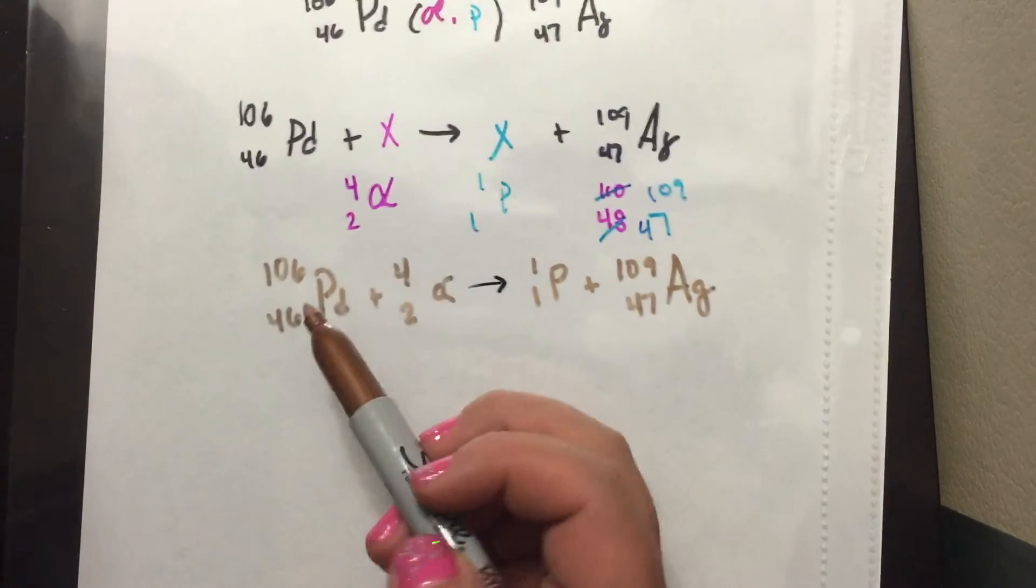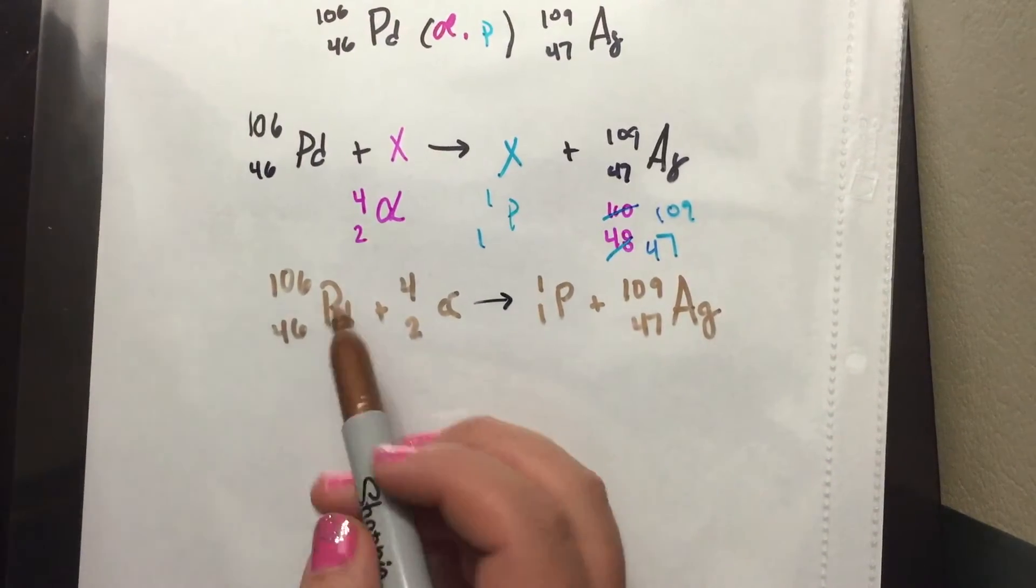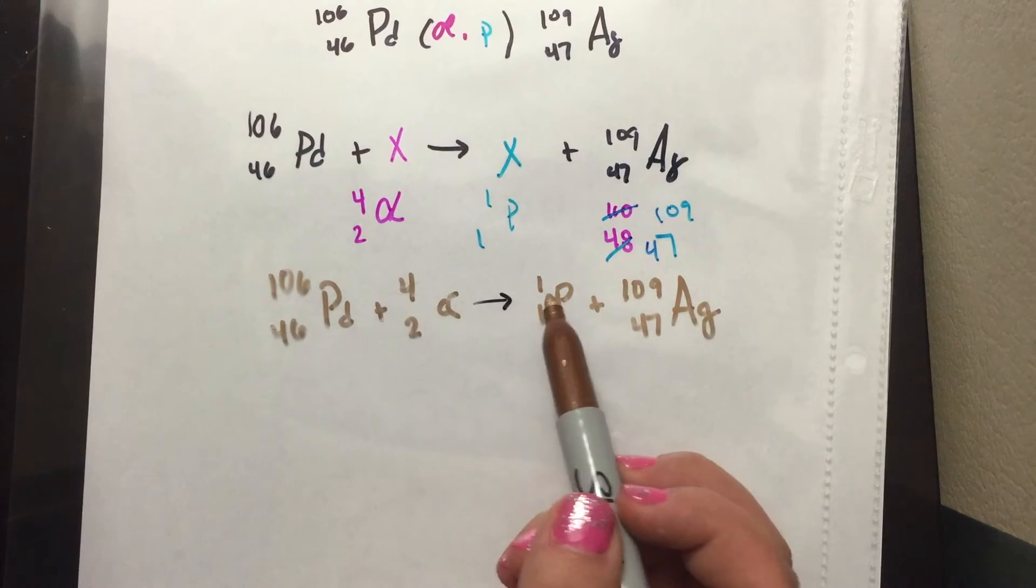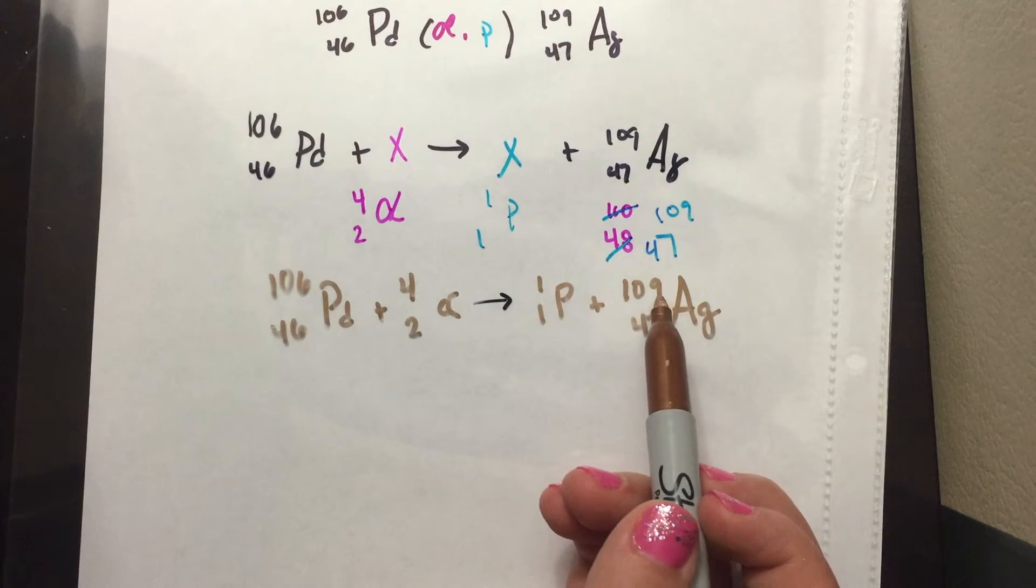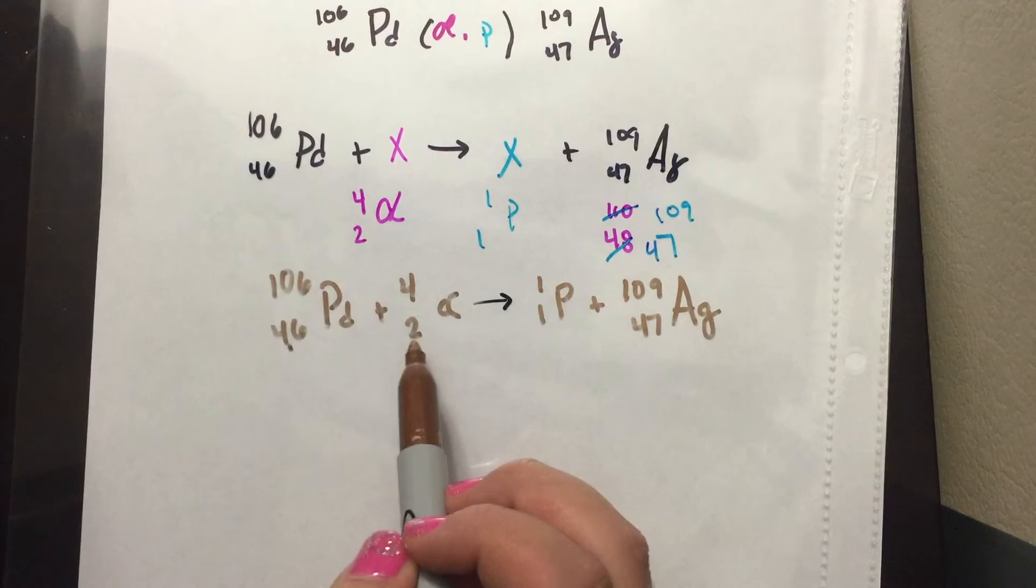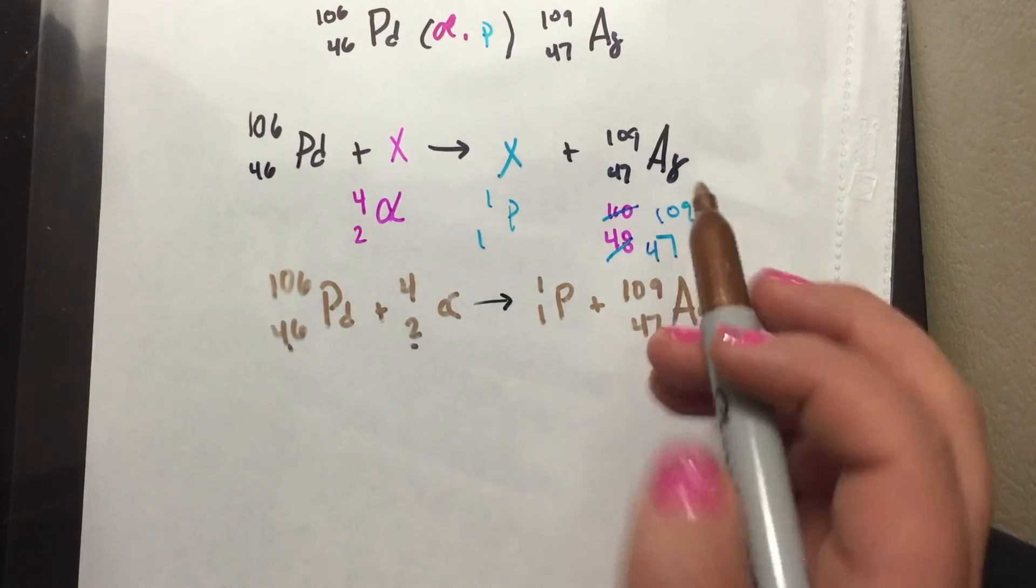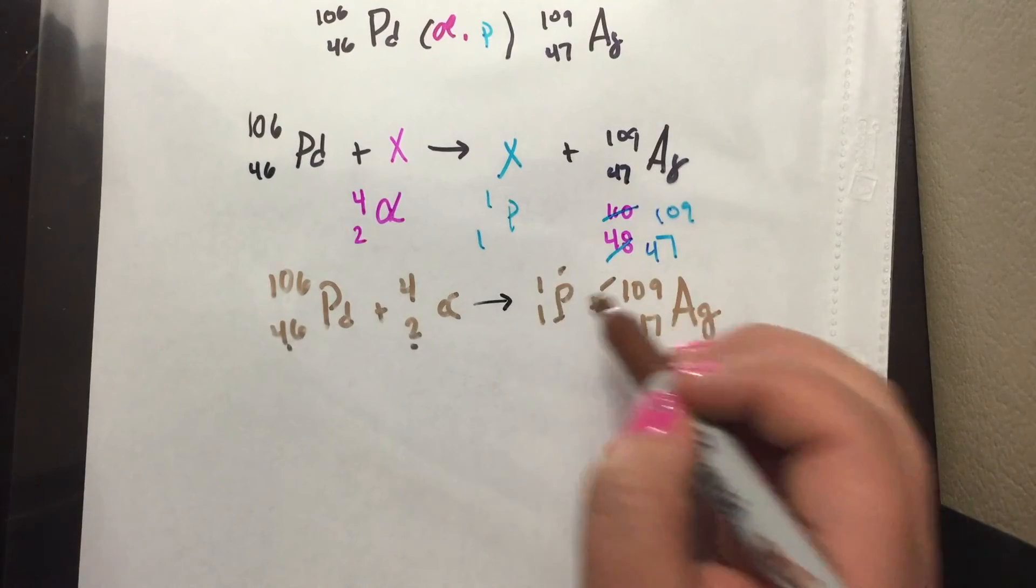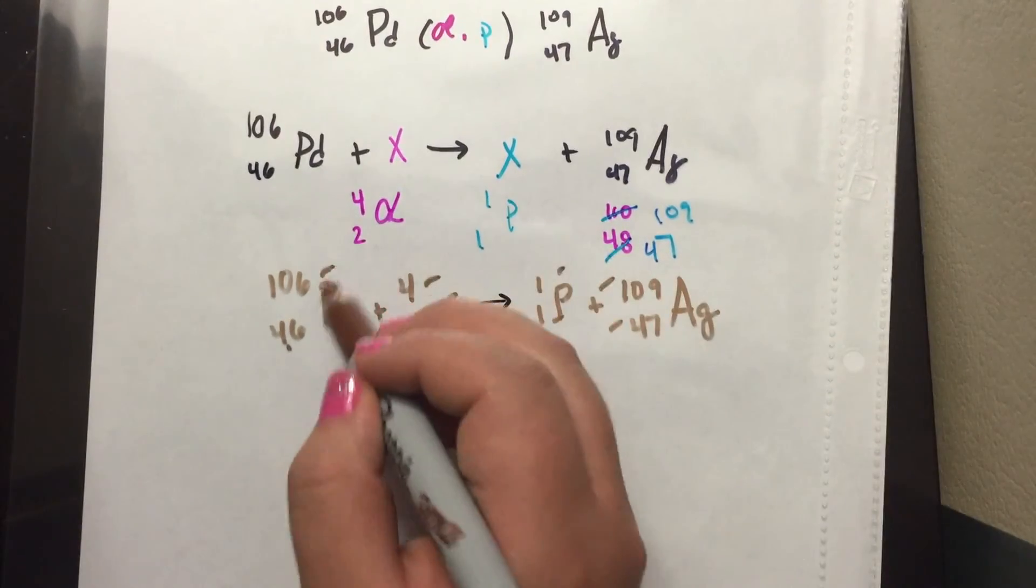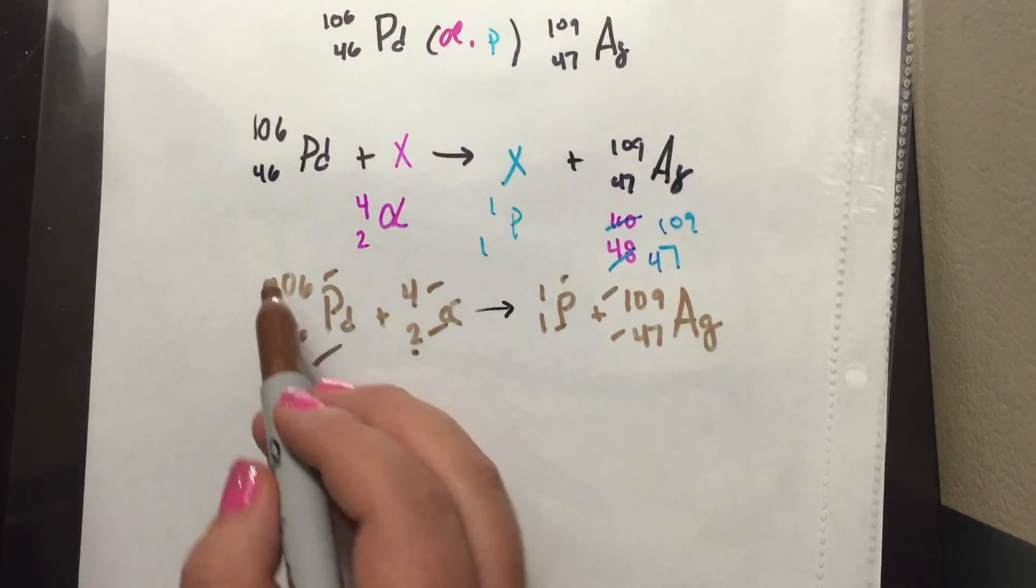So now we can go ahead and check 106 and 46. So 106 plus 4 is 110 minus 1 is 109. And then 46 plus 2 is 48 minus 1 is 47. So everything checks off, which this is our balanced equation.